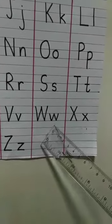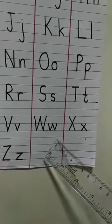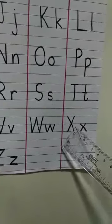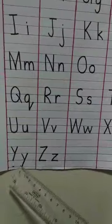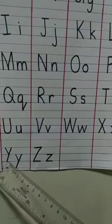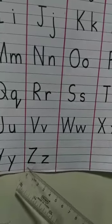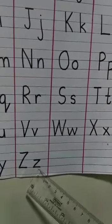W for watch, capital W, small w. X for X-ray, capital X, small x. Y for yo-yo, capital Y, small y. Z for zebra, capital Z, small z.